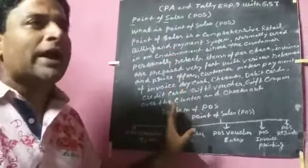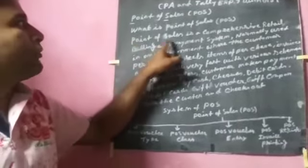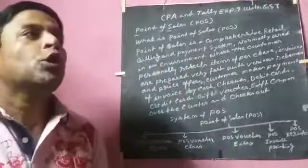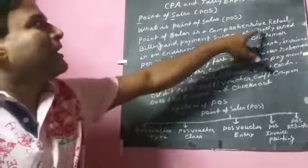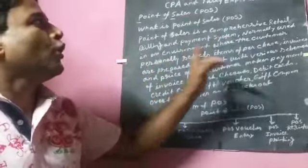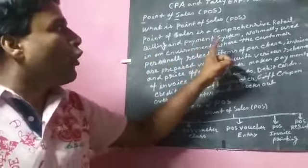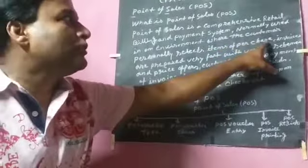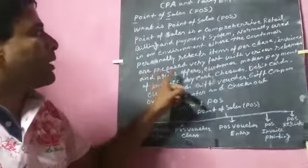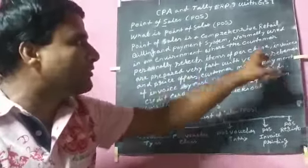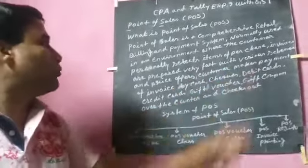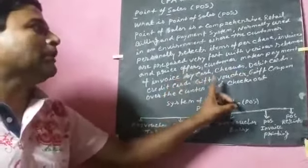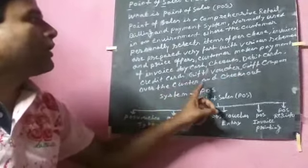Point of Sales is a comprehensive retail billing and payment system, normally used in an environment where the customer personally selects items for purchase. Invoices are prepared very fast with various schemes and price offers. The customer makes payment of invoices by cash, check, debit card, credit card, gift vouchers, and coupons over the counter at checkout.